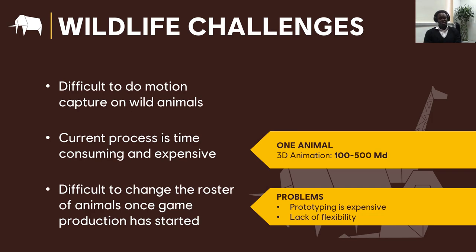On the other hand, keyframe animations are very time-consuming and expensive to produce. Depending on the animal, we estimate the workload to vary between 100 man-days to 500 man-days: 100 for a secondary animal with minimal animations like a deer which runs away when it sees the player, and 500 for primary animals such as pets or predators that can interact with the player. All these make animation prototyping for animals very expensive, and once production starts, it is very difficult to change the list of animals for which animations have already been created.